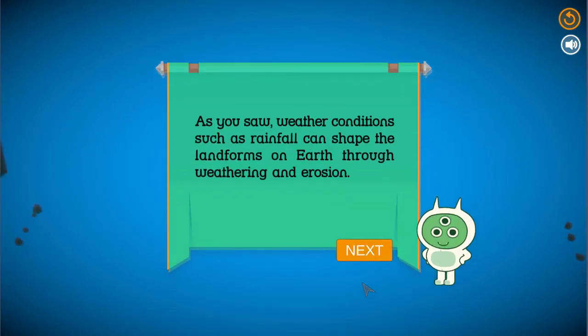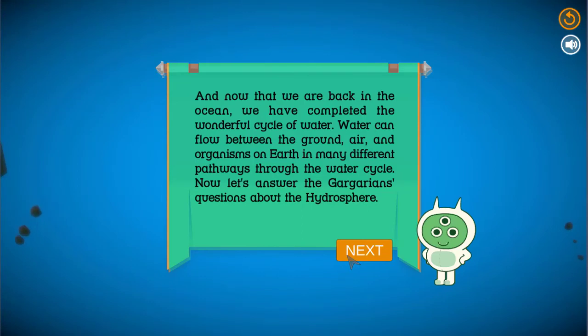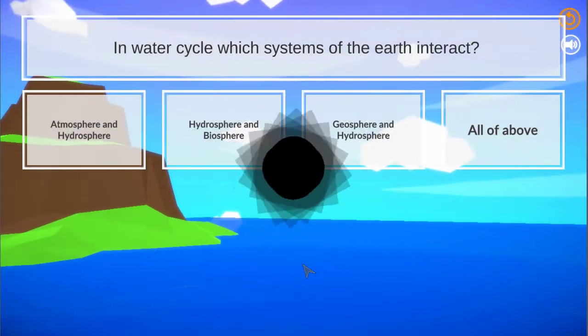As you saw, weather conditions such as rainfall can shape the landforms on earth through weathering and erosion. We have completed the wonderful cycle of water. Water can flow between the ground, air, and organisms on earth in many different pathways through the water cycle. Now let's answer the Gargarians' questions about the hydrosphere.